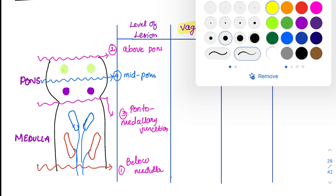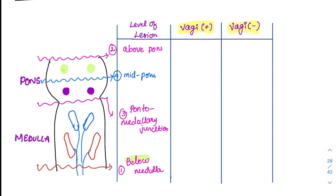Four lesions are studied; I suggest going in this order: below medulla, above pons, mid pons, and pontomedullary junction. For below medulla: when we cut just below the medulla, no respiratory neurons can reach the respiratory muscles, so respiration completely ceases — there is a respiratory arrest. Whether the vagus is intact or not doesn't matter, because none of the impulses are coming out of the medulla.